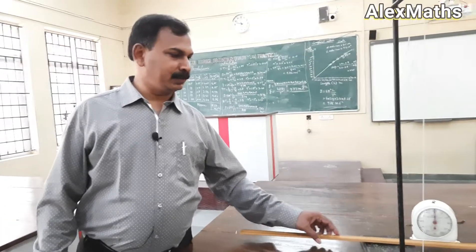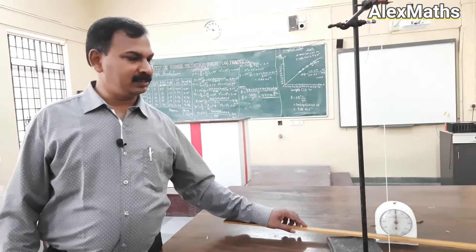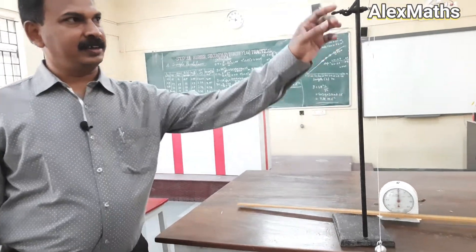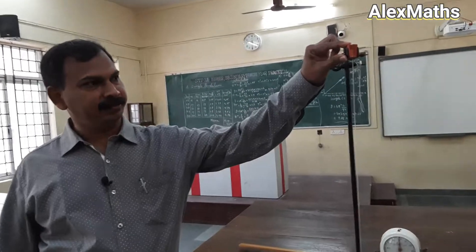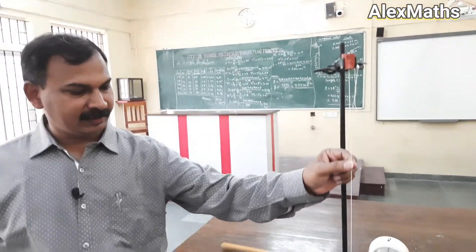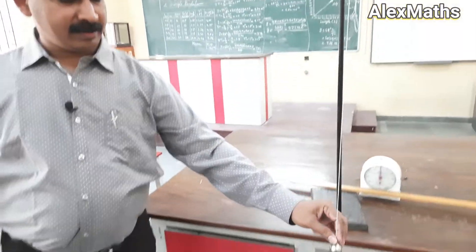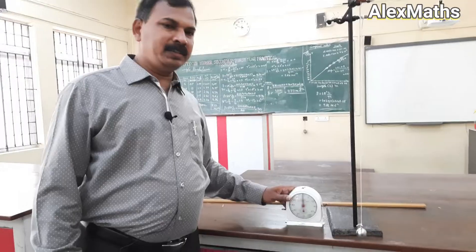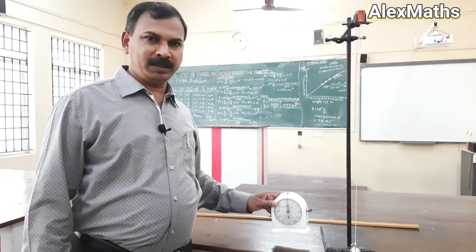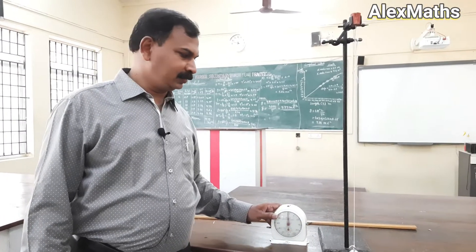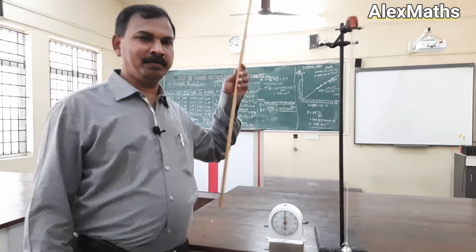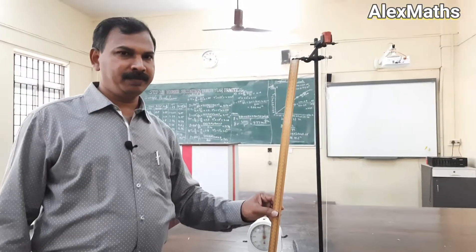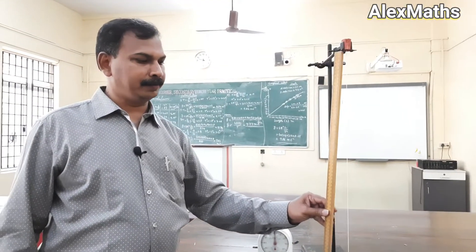For doing this experiment, the apparatus we need: this is a stand of a simple pendulum where we have connected a torsionless head, and there we have a thread and a bob. We also need a stop clock and a meter scale for measuring the length of the pendulum.